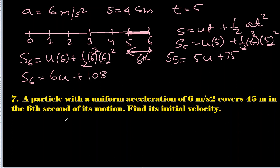Here they're saying that it travels 45 meters. So that means s₆ minus s₅ is 45 meters. The distance up to 5 is subtracted from distance up to 6 and we'll get the difference which is the sixth second.